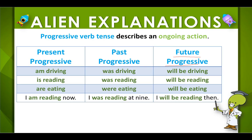The future progressive describes an action that will be ongoing at some point in the future. It will have will be plus the ing form: will be driving, will be reading, will be eating. Like in the sentence: I will be reading then.